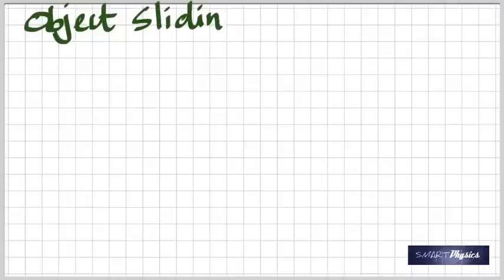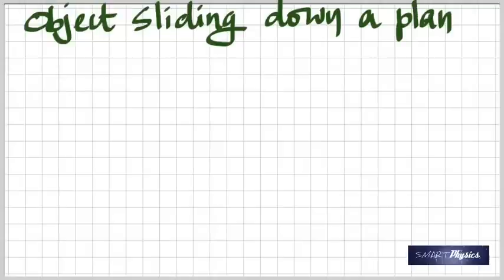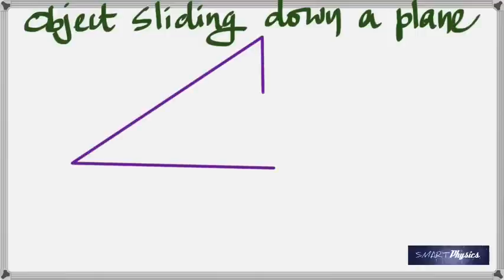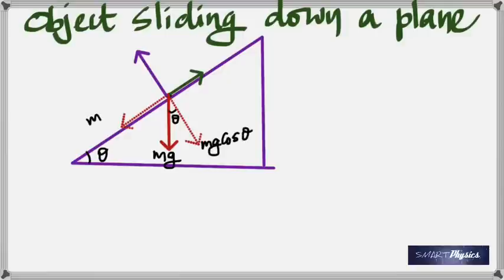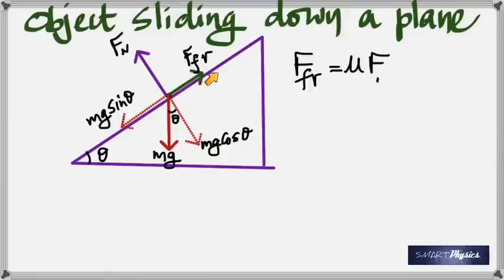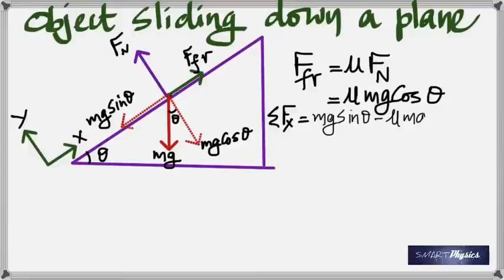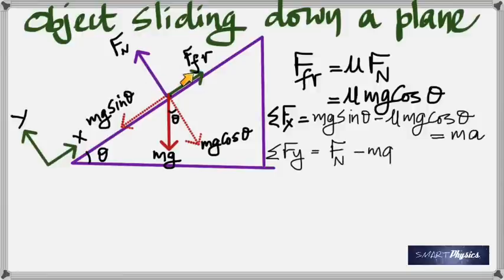For an object sliding down an inclined plane: weight Mg acts vertically down, resolved into Mg·sin θ along the plane and Mg·cos θ perpendicular. Friction acts against motion: friction = μ·Fn = μ·Mg·cos θ. The net force along the x-axis is Mg·sin θ minus friction, equal to Ma. The net force along the y-axis is zero.